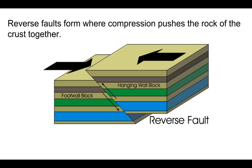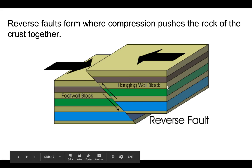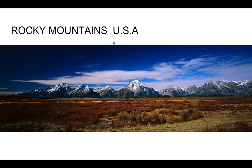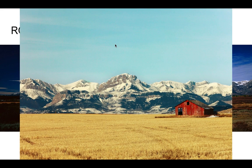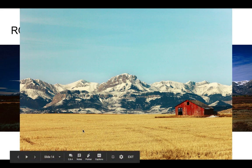Reverse faults form where compression pushes the rock together. In this case, the hanging wall moves upward. An example of a reverse fault are the Rocky Mountains in western United States. In these pictures, you can clearly see where the hanging wall was uplifted and the foot wall remains flat.